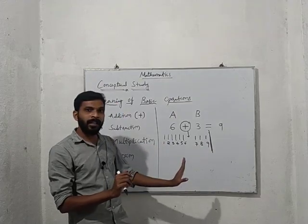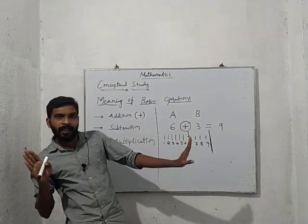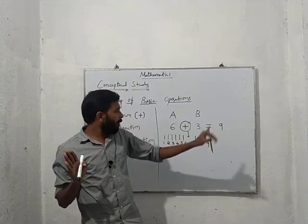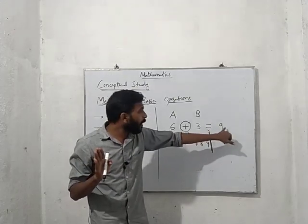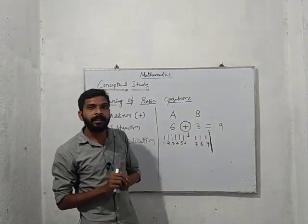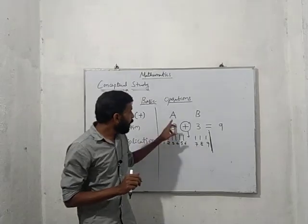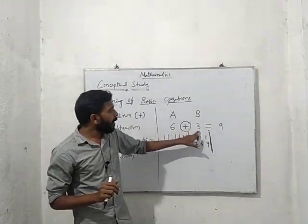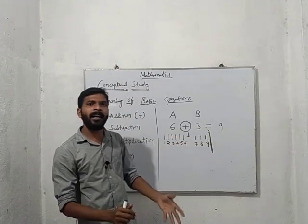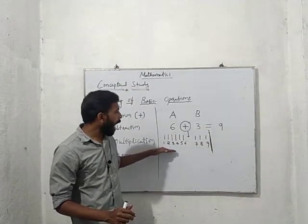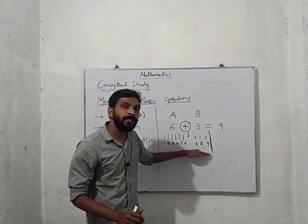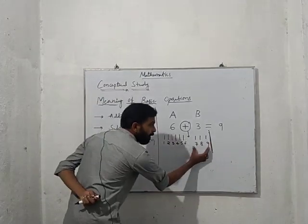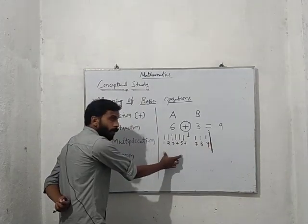Count continuously starting from one chocolate and get the final answer with the last chocolate. That's why we get nine. So six plus three equals nine means we are adding the numbers continuously — giving one group of chocolates to the other so the group becomes bigger.